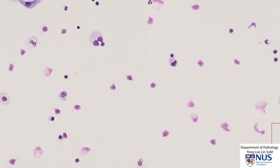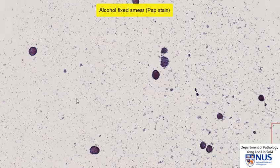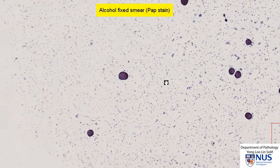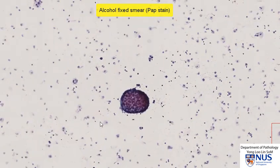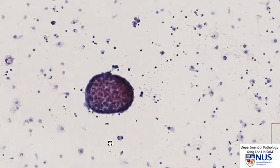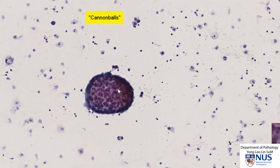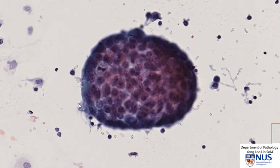Let's have a look at the alcohol-fixed smear. A similar pattern is seen with these very, very rounded cell clusters. Sometimes these are also known as cannonball cell clusters because of the smooth outlines and the rounded shape. We can actually appreciate a mitotic figure here.